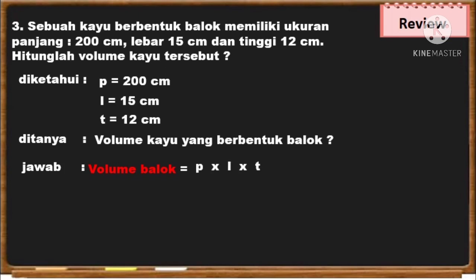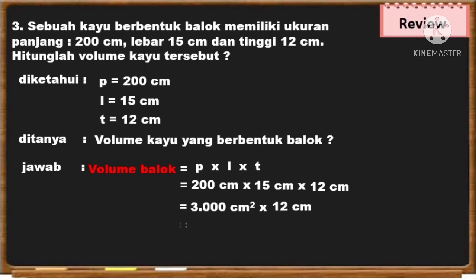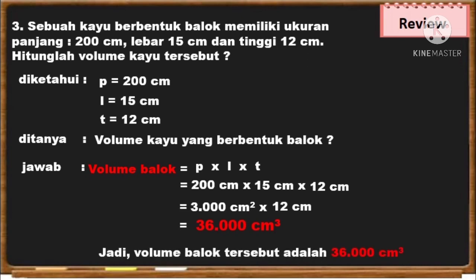Panjang dikali lebar dikali tinggi. Kita masukkan ke dalam rumus: panjangnya 200 cm dikali lebarnya 15 cm dikali tingginya 12 cm. Kita kalikan, hasilnya 3.000 cm persegi, kita kalikan 12 cm. Hasil akhirnya adalah 36.000 cm kubik. Jadi, volume balok tersebut adalah 36.000 cm kubik.